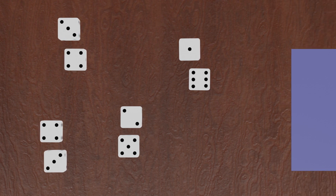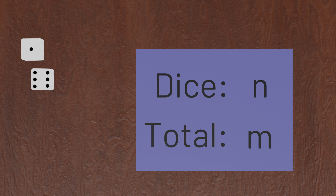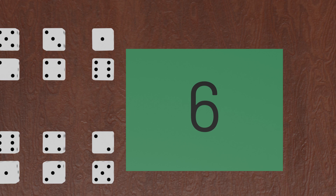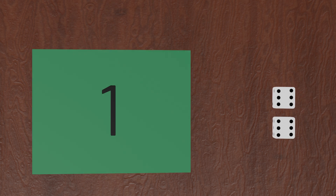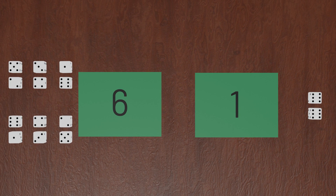We might ask a general question that lets us precisely figure out these sorts of values: given n dice, each with sides from 1 to 6, how many different ways can we roll a total of m? With n=2 and m=7, we can calculate that there are six ways to make a total of 7. With n=2 and m=12, there's only one way. So with two dice, rolling a 7 is six times more likely than rolling a 12.